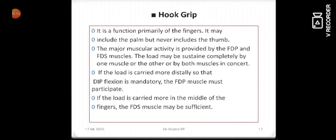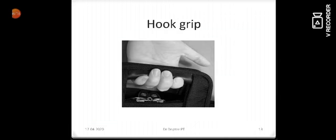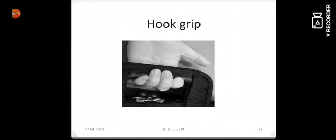Now next is the hook grip. The hook grip is a functional grip of fingers. It includes the palm but never includes the thumb. So it is always done with the fingers. If the load is carried more distally so that the DIP flexion is mandatory, the FDP muscle must participate. If it is proximal, then FDS muscle participates. This is the basic hook grip.